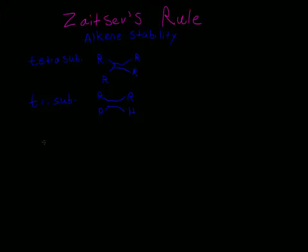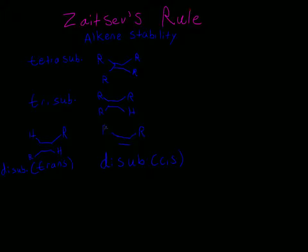The next one is disubstituted, but there are two different disubstituted products we can get: cis and trans. The trans disubstituted has R groups on opposite sides, which is more stable than cis because the R groups are farther apart. In the cis disubstituted, both R groups are on the same side.